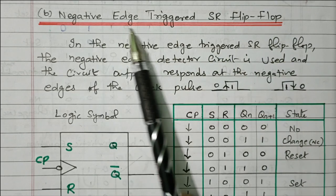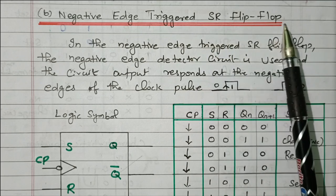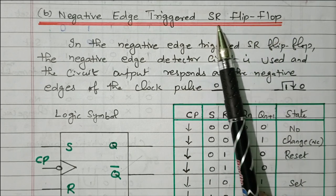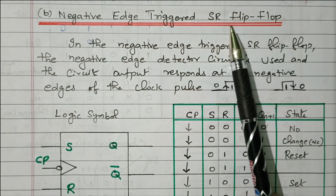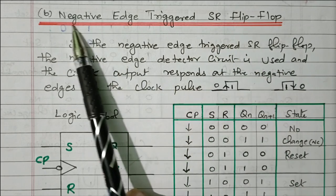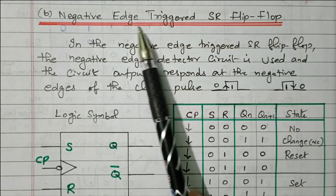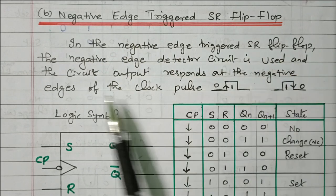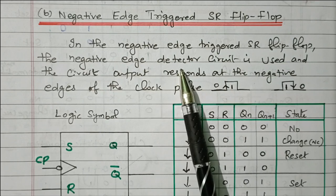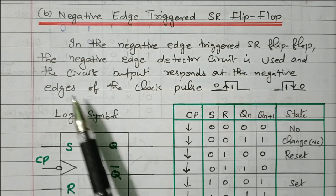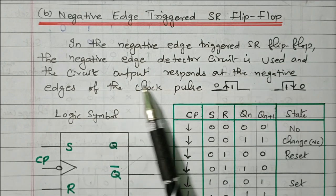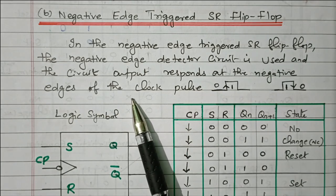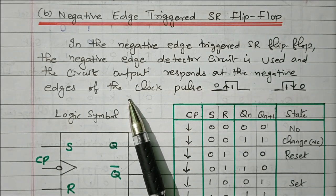Now we will go to the topic: negative edge triggered SR flip-flop. We know that SR flip-flop is the set-reset, a very basic type of flip-flop. In the negative edge triggered SR flip-flop, the negative edge detector circuit is used, and the circuit output responds at the negative edge of the clock pulse.